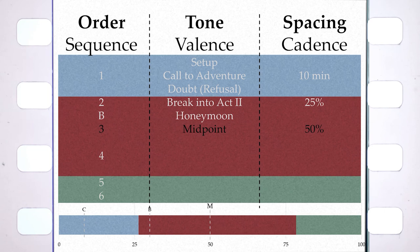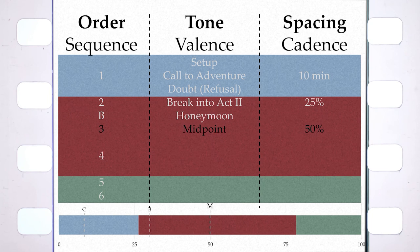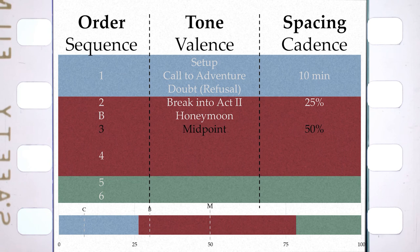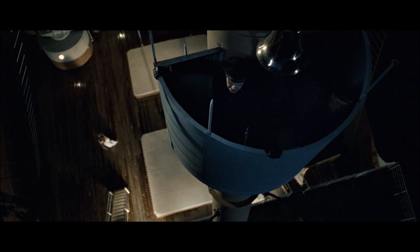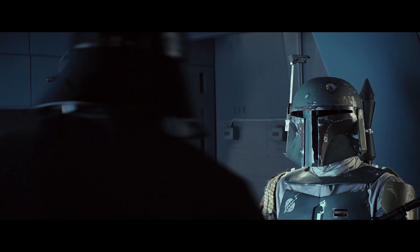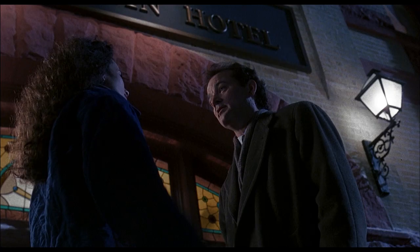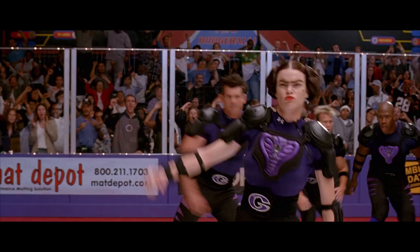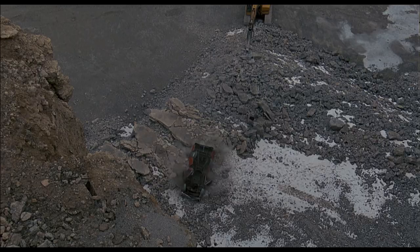We've reached the midpoint in our order, which in terms of spacing is halfway through. What comes next tonally is always the same: things get worse. What's the first thing that happens after Jack and Rose consummate their love in Titanic? What happens after the T-rex breaks out in Jurassic Park? What happens after Peter Parker commits to being Spider-Man? After Cypher makes a deal with Agent Smith? After Luke confronts himself in the cave? After Wikus is rejected by his wife? After Phil is caught manipulating Rita? The tone of the film changes — things get worse.